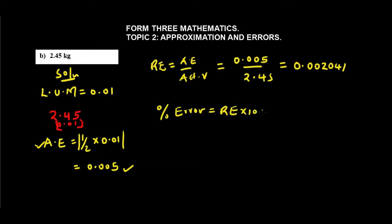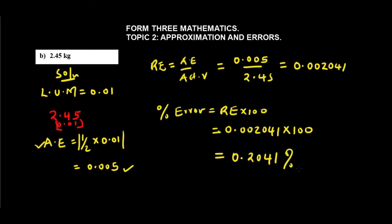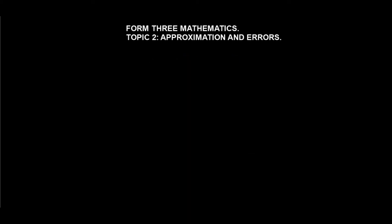The percentage error is the relative error times 100: 0.002041 times 100, which gives us 0.2041 percent, to four significant figures. Next, there is an exercise for you: find the percentage error in the measurement 5.125 grams. See if your answer will be 0.009756 percent. That's it for today — thanks for watching, see you next time.